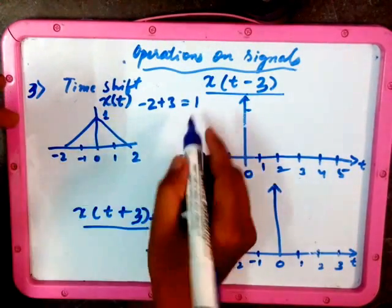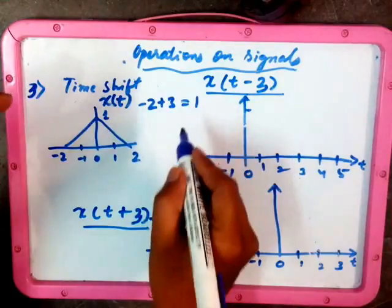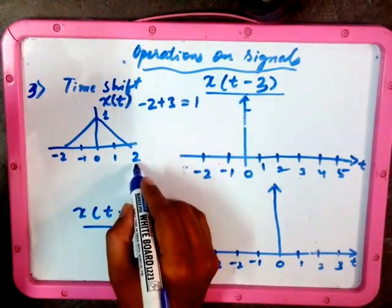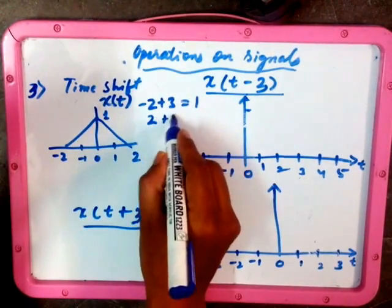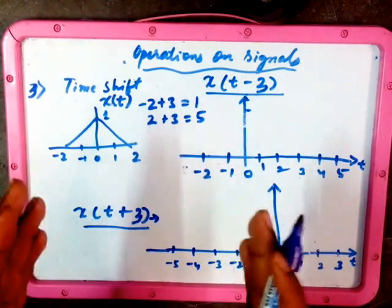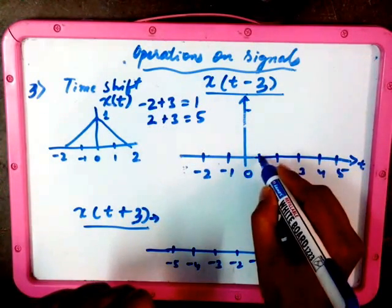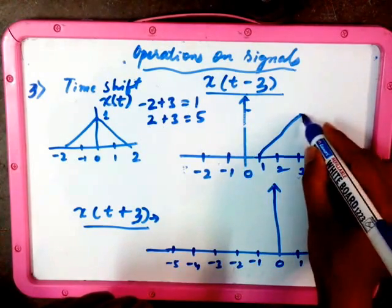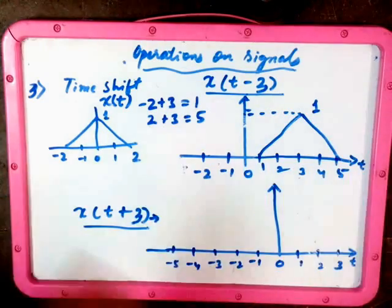So that means it is going to shift to the 1 position, positive 1 position of your axis. Next again, we have the positive range till 2, so it is +2 and +3 of your shifting, that is 5. So your signal is going to range in the time domain from 1 to 5 and amplitudes remain same.